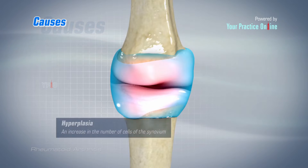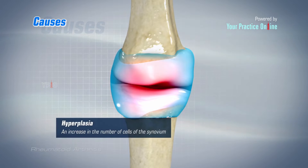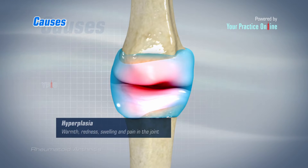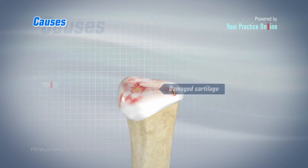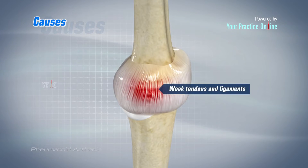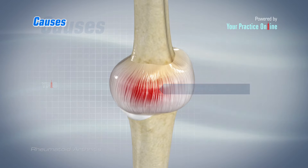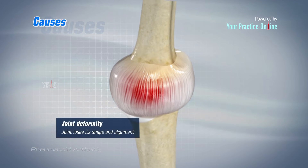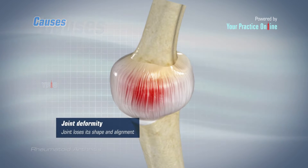The inflammation causes hyperplasia, or an increase in the number of cells of the synovium, resulting in thickening of the joint lining, causing warmth, redness, swelling, and pain in the joint. As the disease progresses, abnormal synovial cells invade and damage the cartilage and bone within the joint. Even the tendons and ligaments that hold the joint will weaken and stretch, and over a period of time, the joint loses its shape and alignment, causing joint deformity.